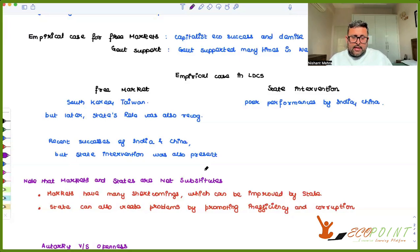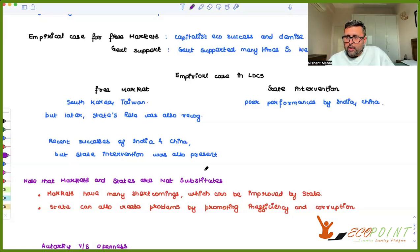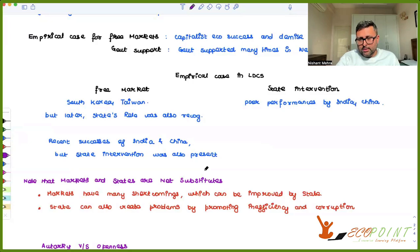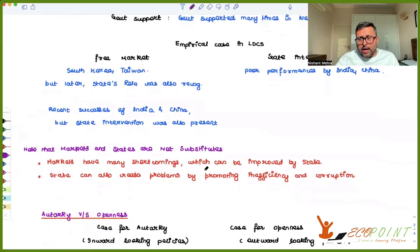The author concludes this part by saying that markets and states are not substitutes of each other — they are going to help each other. Markets have many shortcomings that the state can address: markets don't worry about unemployment or prices, they are just driven by profit maximization. At the same time, state also has problems of inefficiency and corruption when everything is government-controlled, which markets can solve. So you need a middle path — you can't have either a purely state-driven or a purely market-driven economy. This is the first part of the reading.